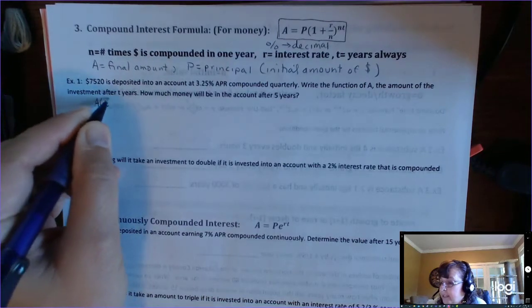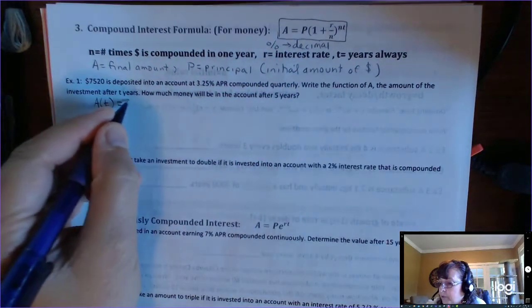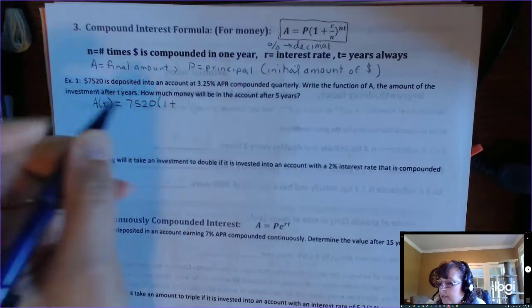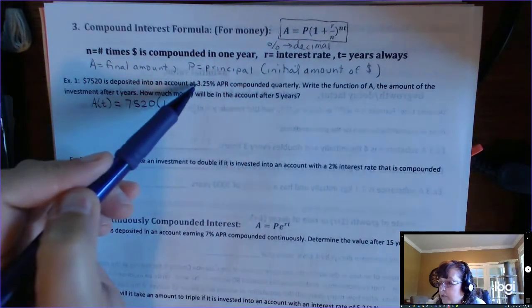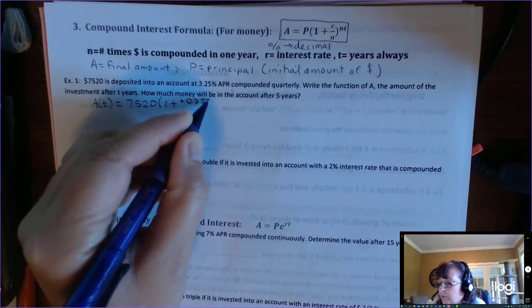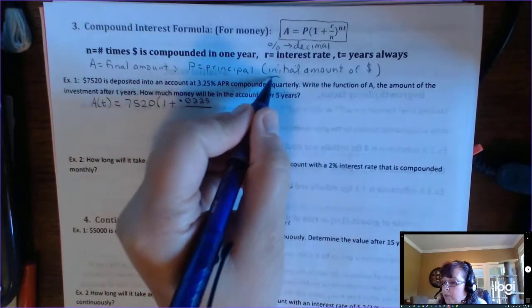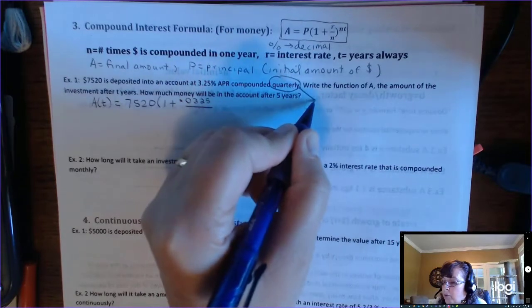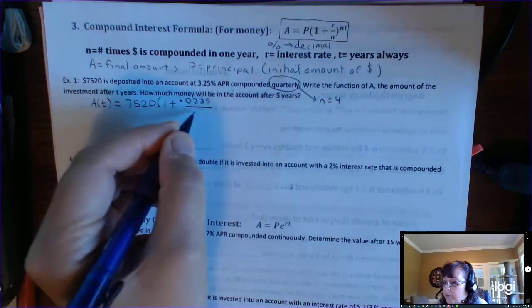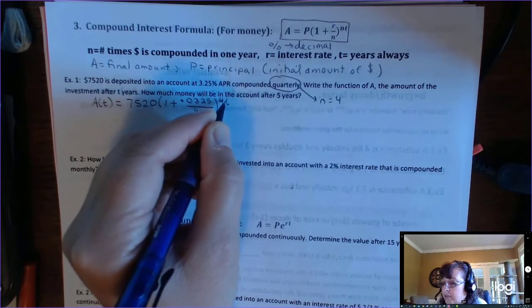Okay, so A of T, function notation, equals P, your principal is your initial money amount, 7520, times 1 plus. The R is your percentage rate converted to a decimal, so 0.0325 over, and then see where it says compounded quarterly. So quarterly means four times a year. So that means that n is four. So we have divided by four here and raised to the fourth power here, and T is our input.